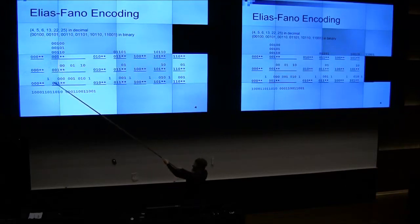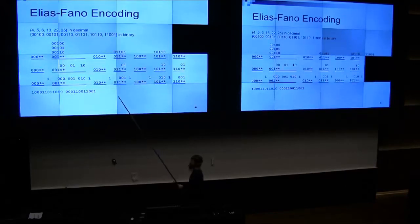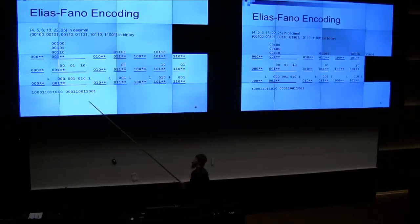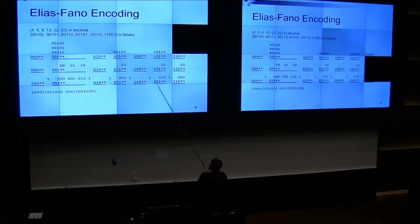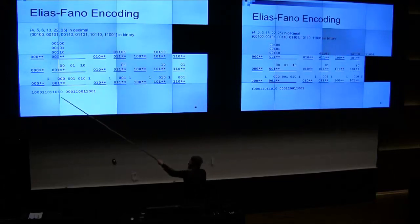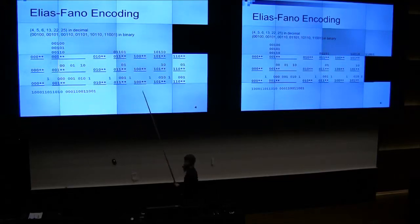The blue numbers are the control bits — I don't actually know what they're called; I've never finished reading the paper. Anyway, you then separate the two parts. This is how it would be encoded — the space is just there for emphasis.